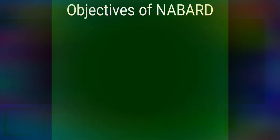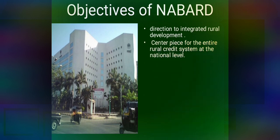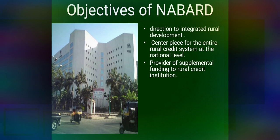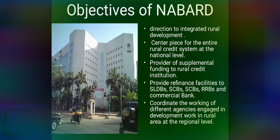Here are the objectives of NABAD — the reasons why NABAD was set up by the Government of India and the motives behind it. It gives undivided attention and purposeful direction to integrated rural development. It also acts as the centerpiece for the entire rural credit system at the national level, provides supplemental funding to rural credit institutions, provides refinance facilities to different agencies and commercial banks for development purposes in rural areas, and coordinates the working of different agencies engaged in development work in rural areas at the regional level.